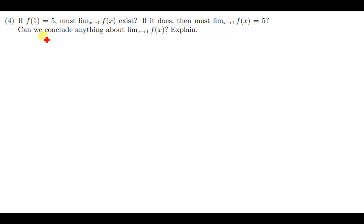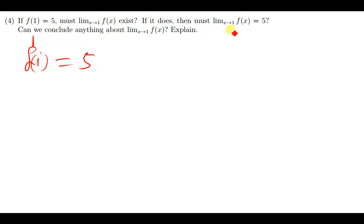Question 4 is the opposite of question 3. If f(1) equals 5, must the limit of f(x) as x approaches 1 exist? The answer is yes. If the limit does exist, must it equal 5? Yes. Can we conclude anything about the limit? Yes, we can say it exists. That's all — this is how you answer such questions.